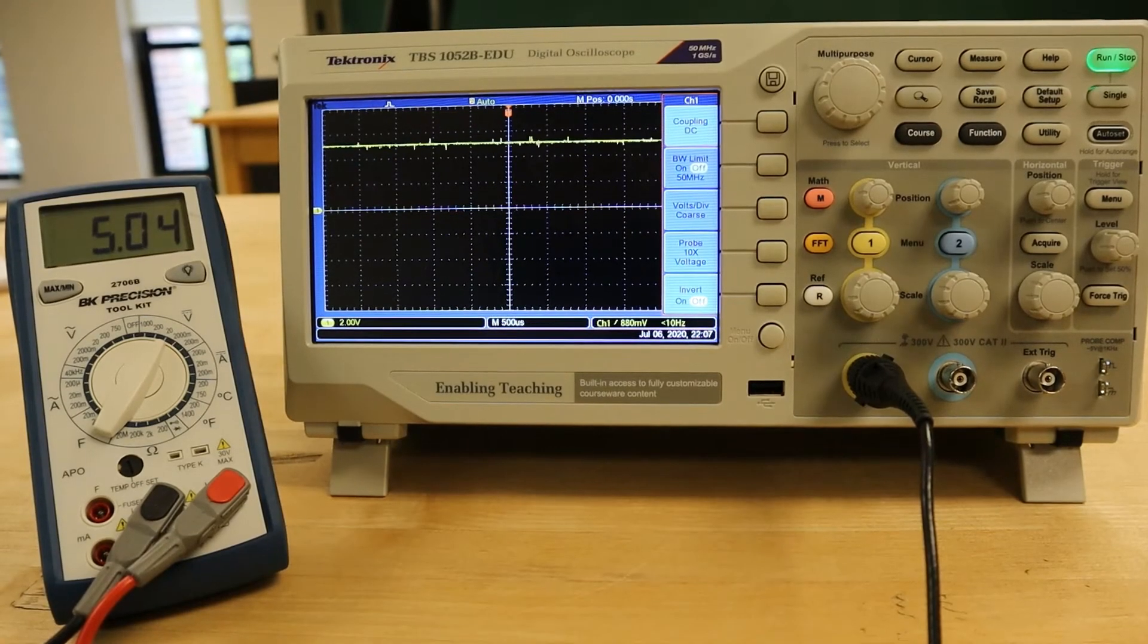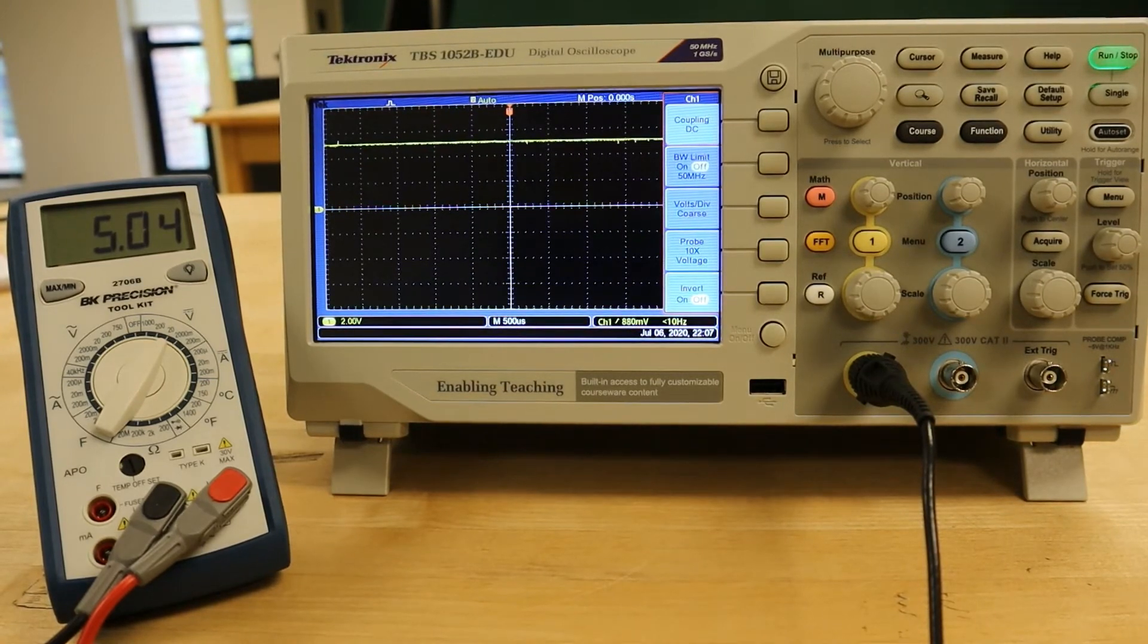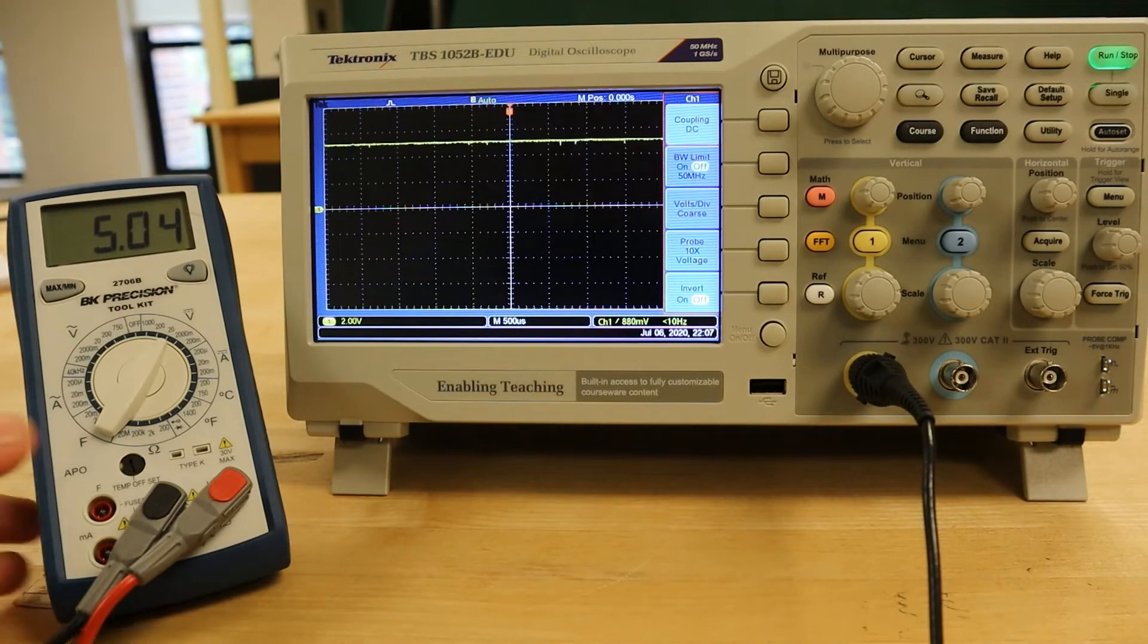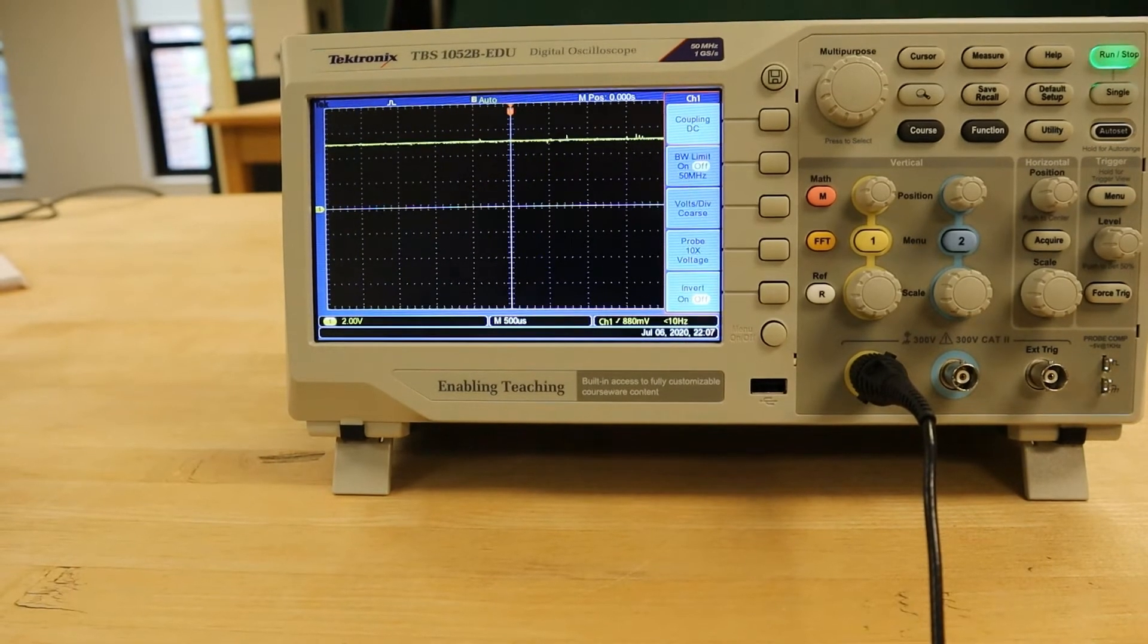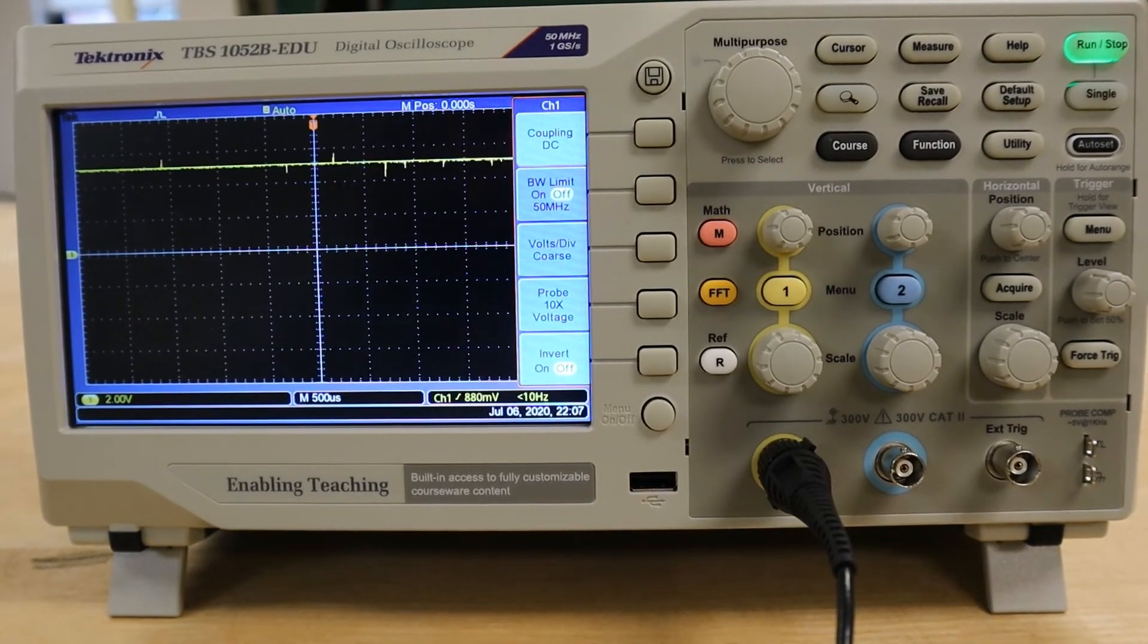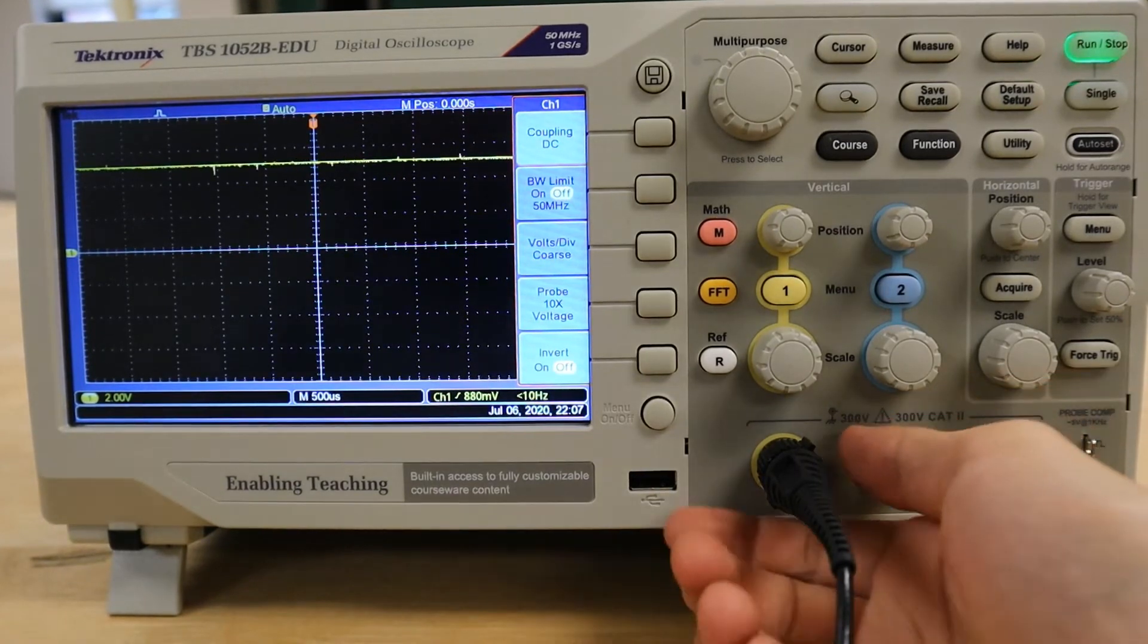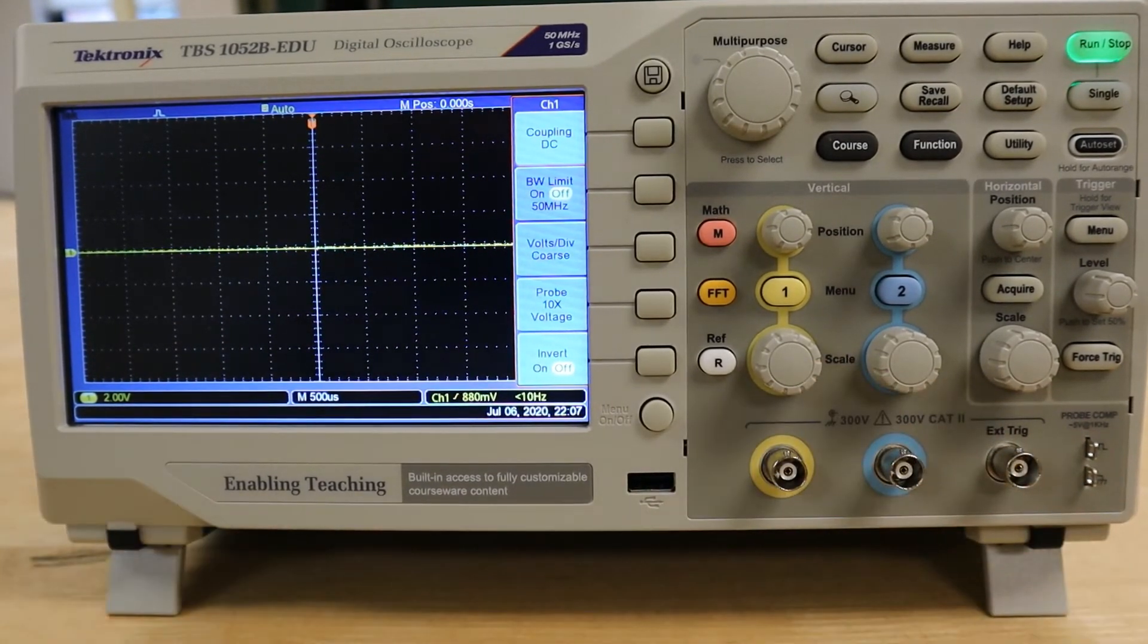Now, I can imagine what you're thinking. Why bother using the oscilloscope to measure voltage when it was clearly easier to use the DMM? Well, while this may be true for measuring DC or direct current, where the oscilloscope really distinguishes itself is in measuring alternating current or AC.